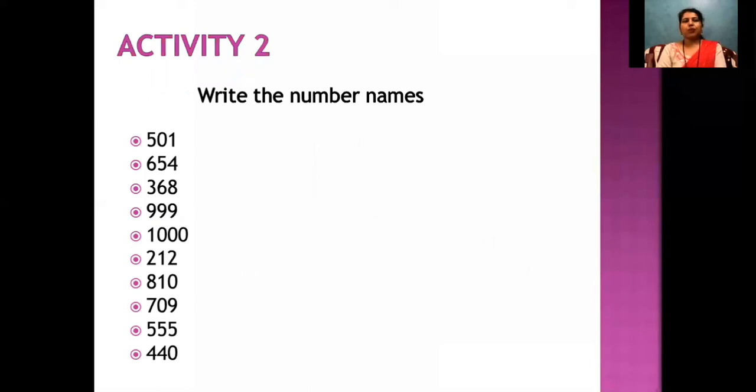Now activity 2 is write the number names. Here I have given you a few numbers and you have to write the spellings of those numbers correctly. So I will read the numbers for you: 501, 654, 368, 999, 1000, 212, 810, 709, 555, 440. Now what you could do is, here before writing the numbers, you could write there units, tens, hundreds, thousands, so you know the spacing is correct and your work is neater.